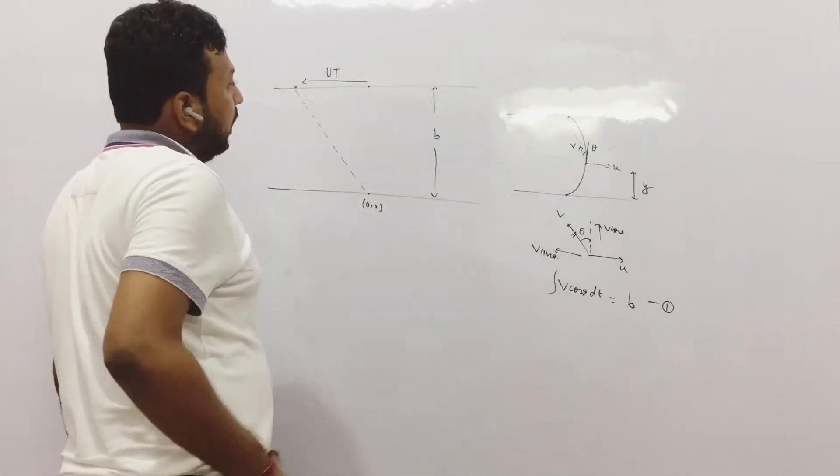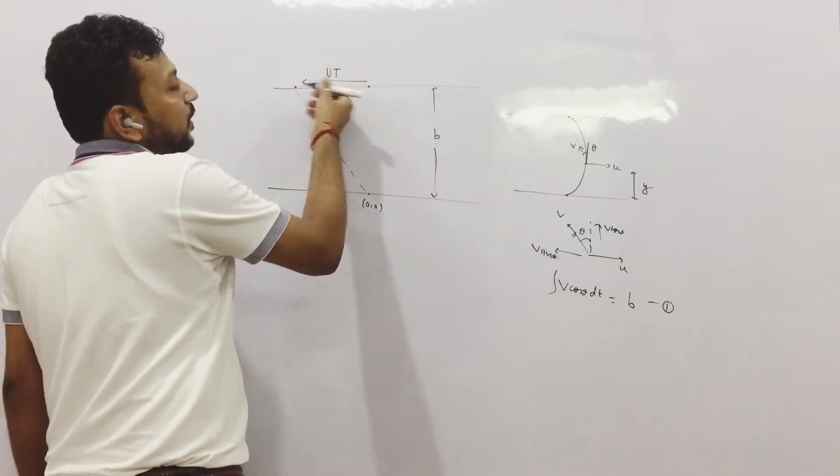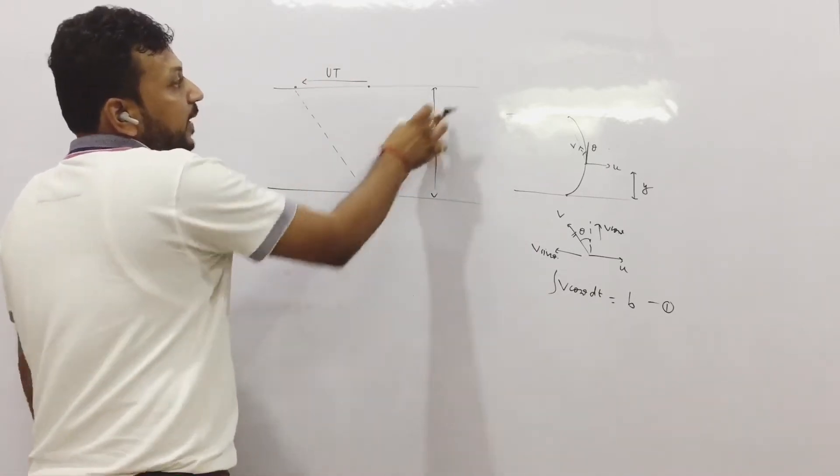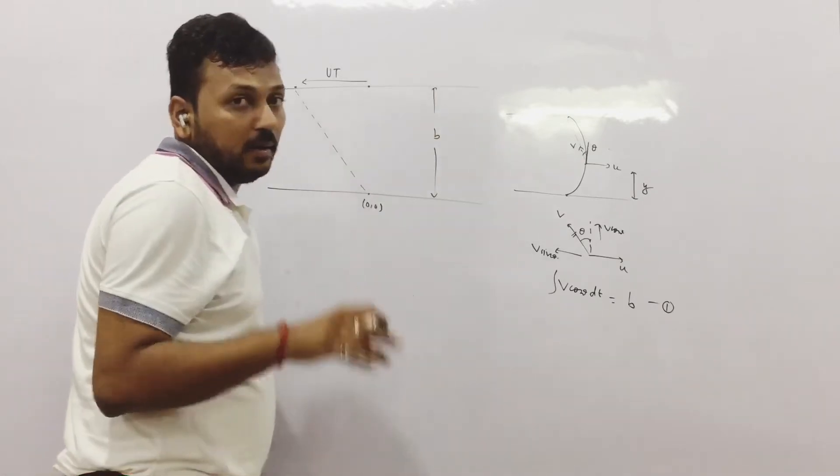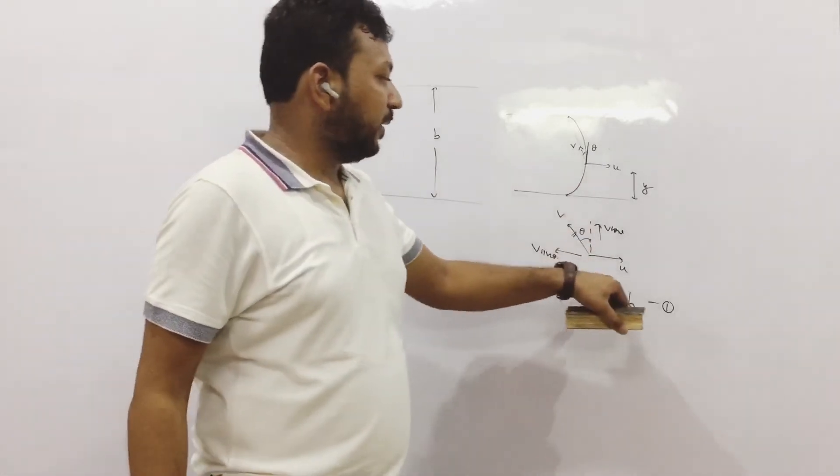Second thing is, we can see ut was the distance which had to be covered. In this situation I did not consider any current velocity. Only ut was considered, in this situation both are considered.